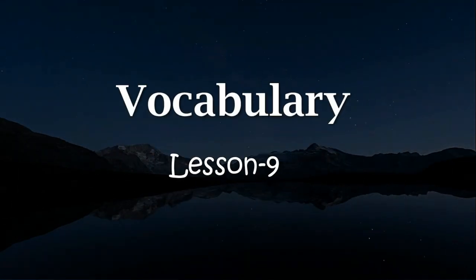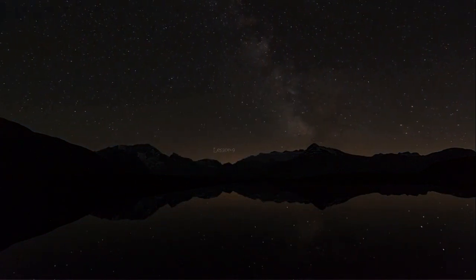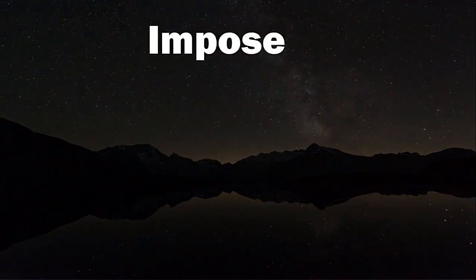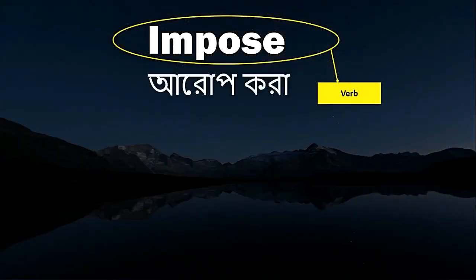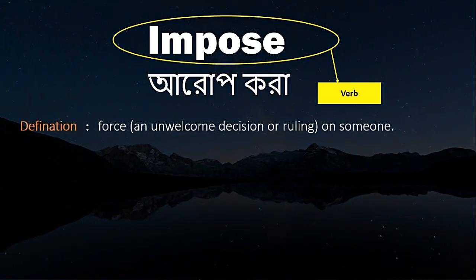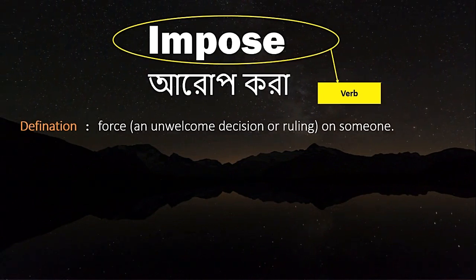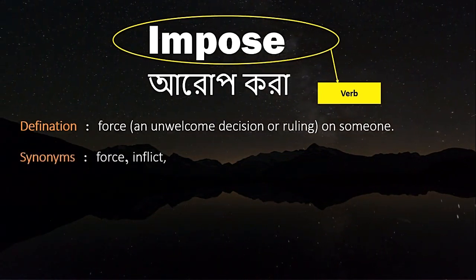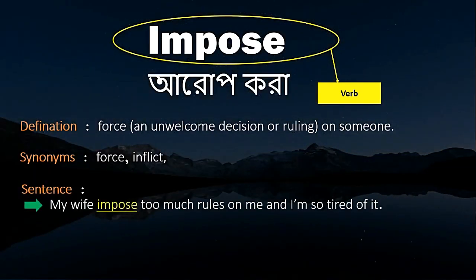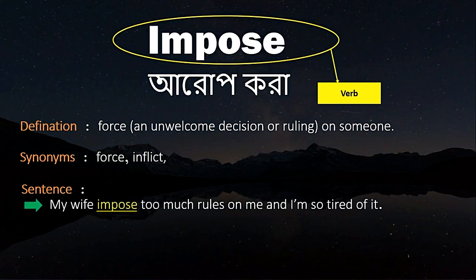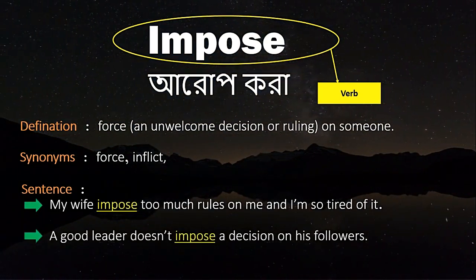Hello guys, welcome to our vocabulary lesson video, and it is lesson 9. So let's get started. The first one is 'impose'. Impose is a verb. Bangla meaning: arop kara. Definition: to force an unwelcome decision or ruling on someone. Synonyms: force, inflict. Sentence: My wife imposes too many rules on me and I am so tired of it.